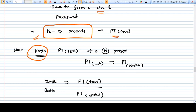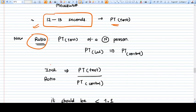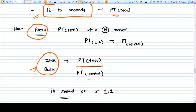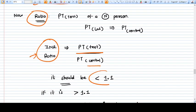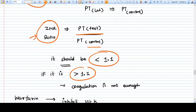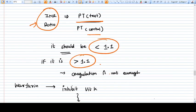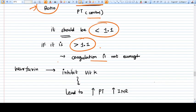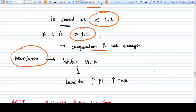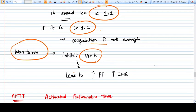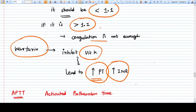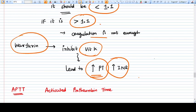In INR ratio, there will be the ratio of PT of the test sample and the PT of the control sample. It should be less than 1.1. If it is more than 1.1, that means coagulation is not enough, or sometimes warfarin kind of drugs, which are blood thinners that inhibit vitamin K, will lead to delay in the extrinsic and common pathway. That's why the PT and INR will be increased in these cases.